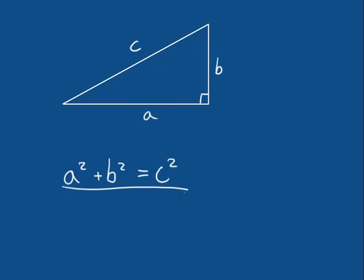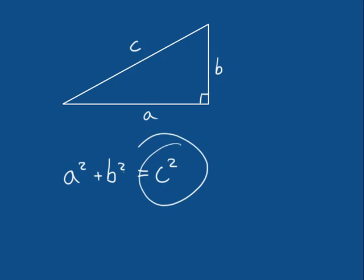This is Pythagoras' theorem. It's a very simple formula and it's a very easy formula to remember, which is great because we use it so often — A squared plus B squared equals C squared. C is the hypotenuse, and A and B are the other two edges of the triangle. So it's important that the other two edges of the triangle — their lengths squared and added together — is equal to the hypotenuse squared, which is the edge that sits opposite our right angle.